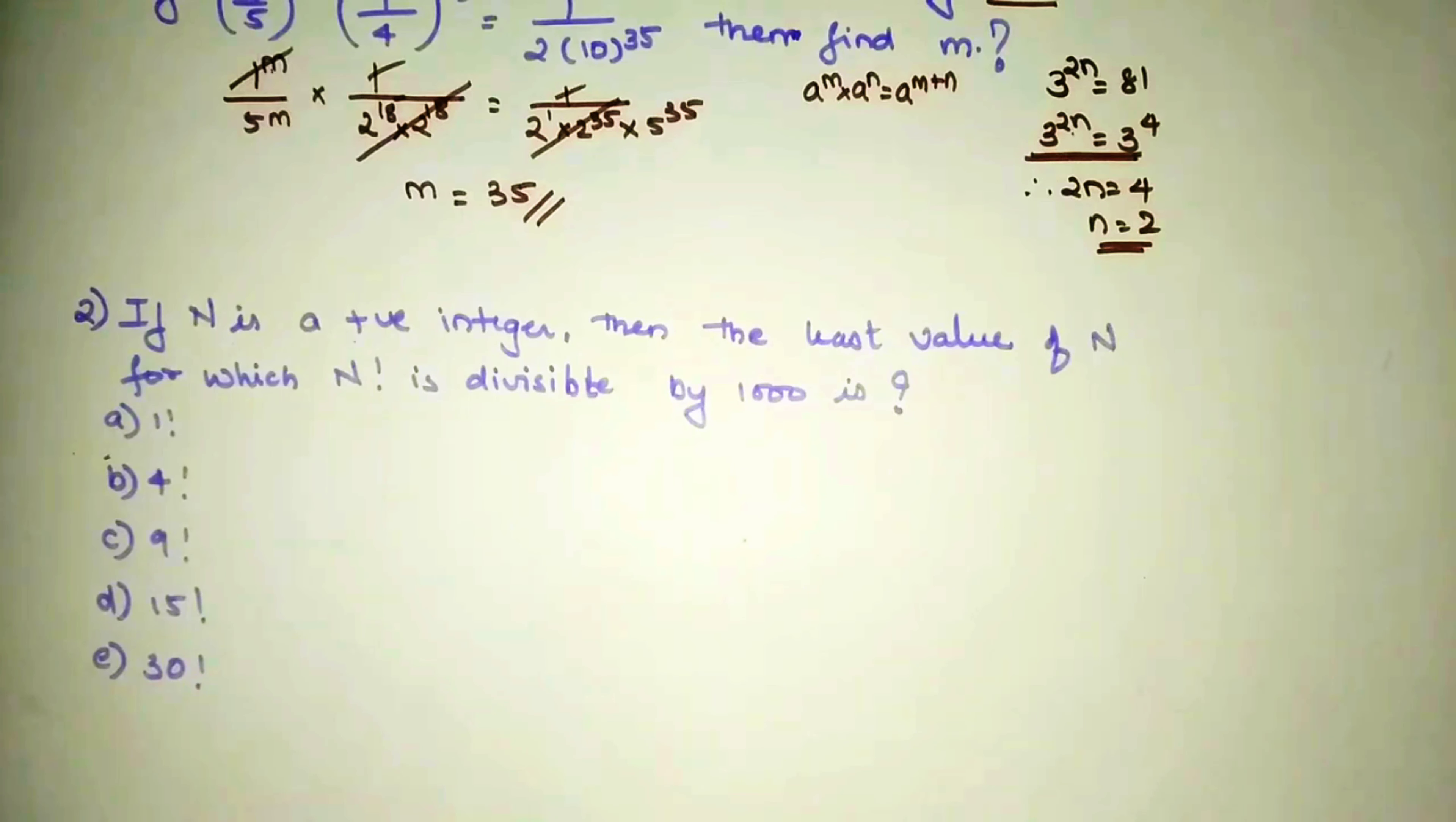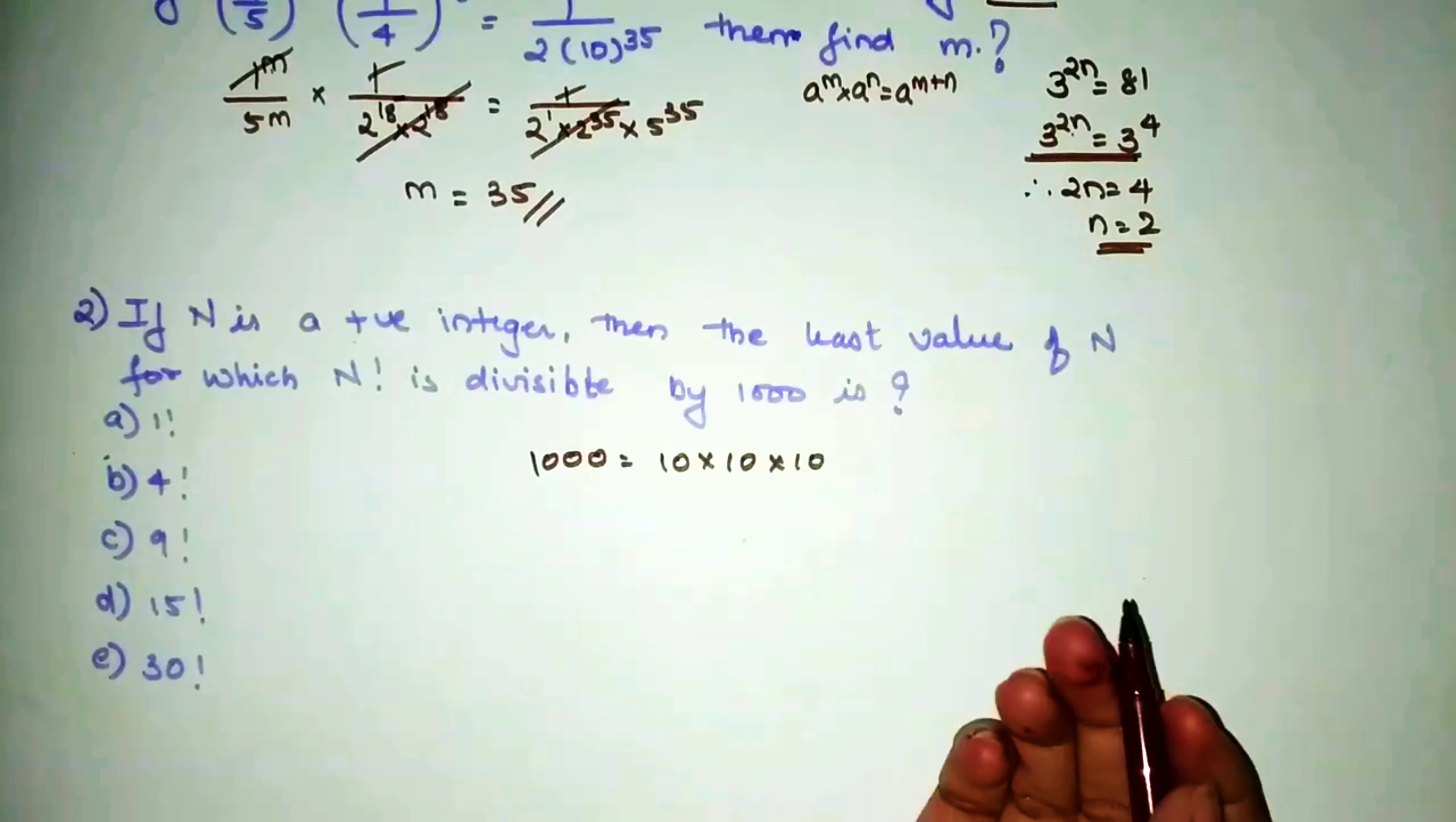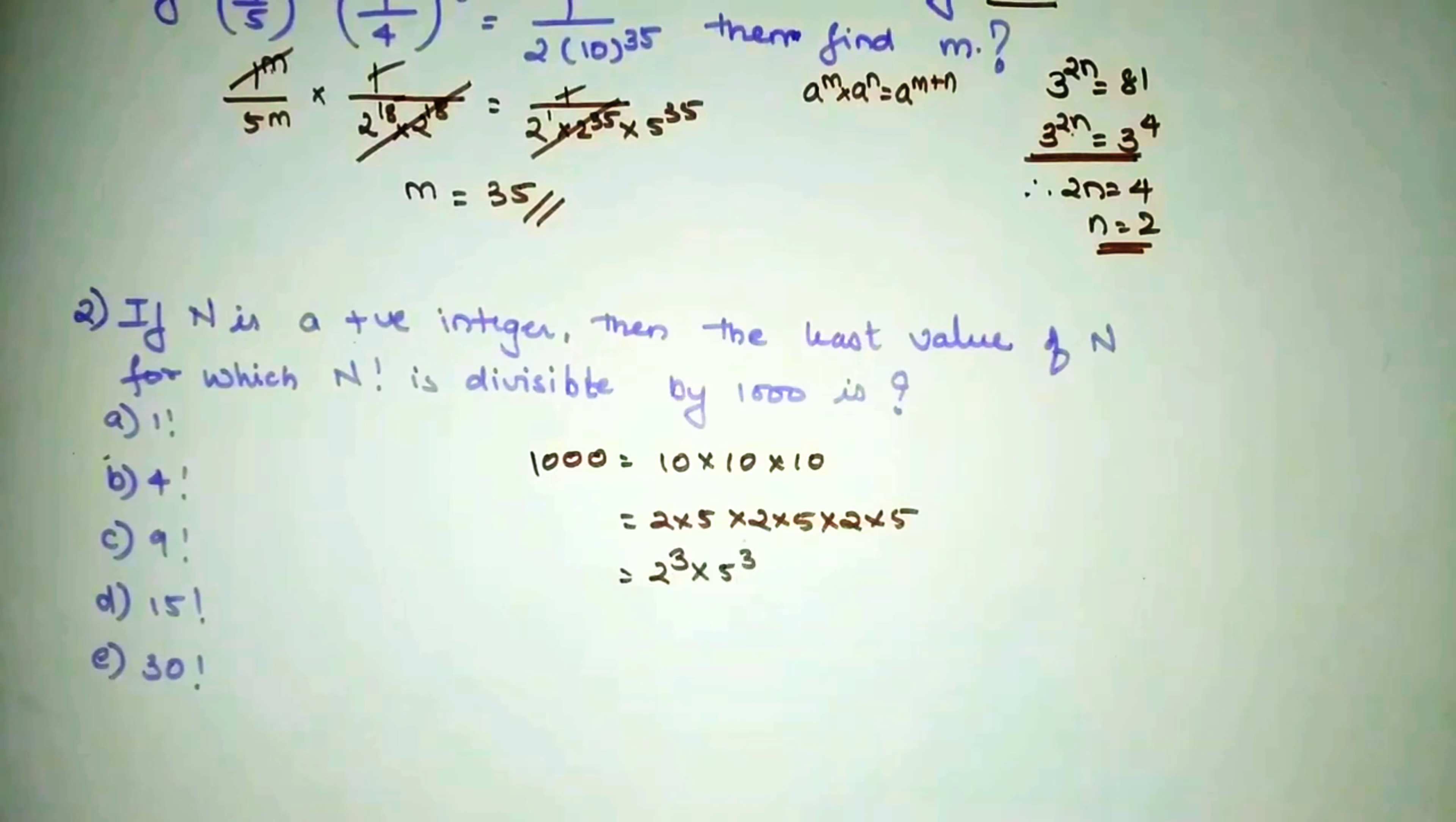Okay, now let's talk about the next question, which is if N is a positive integer, then the least value of N for which N factorial is divisible by 1000 is what? For this question, we will go through the options. First, 1000 can be written as 10×10×10. And the prime factorization of 10 is 2×5. We repeat it one more time because 10 was getting multiplied thrice.